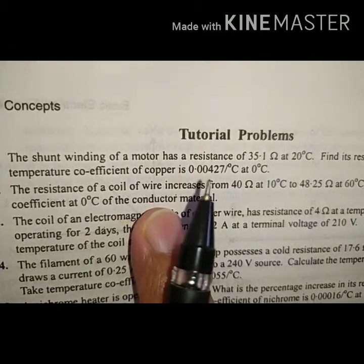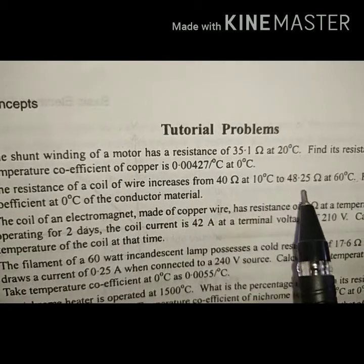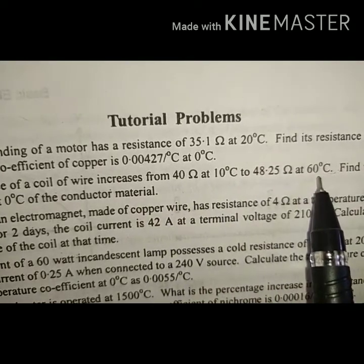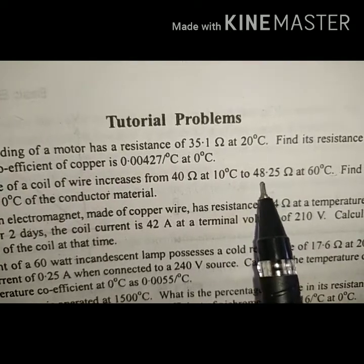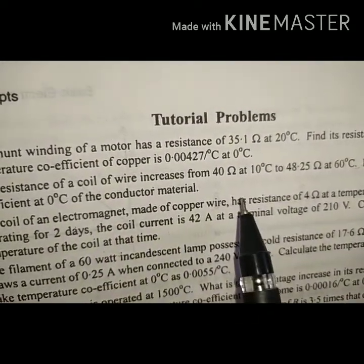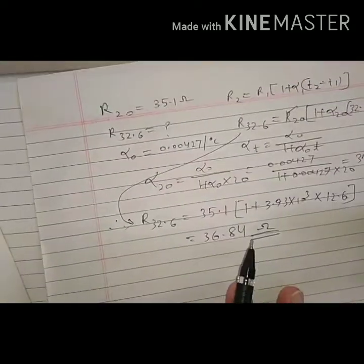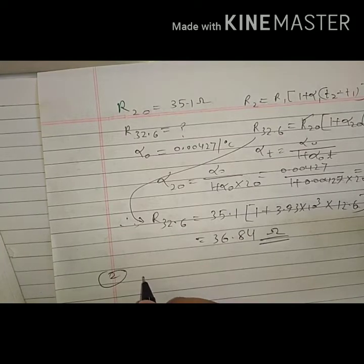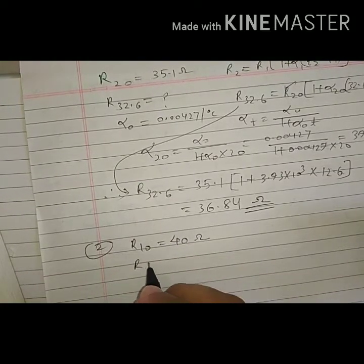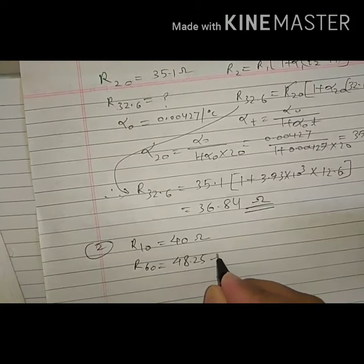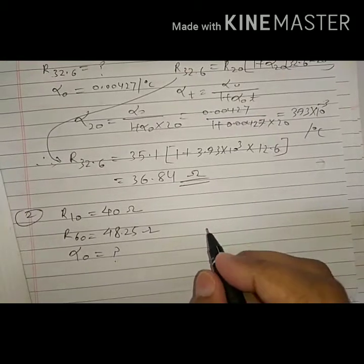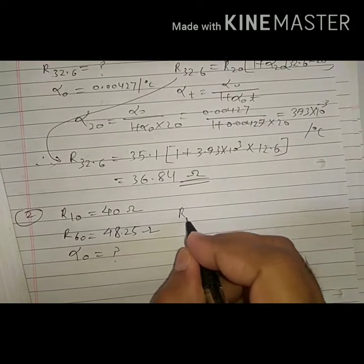Let us go to the next numerical. The resistance of a coil of wire increases from 40 ohm at 10°C to 48.25 ohm at 60°C. Find the temperature coefficient at 0°C of the conductor material. Given: R₁₀ = 40 ohm, R₆₀ = 48.25 ohm. Find α₀.